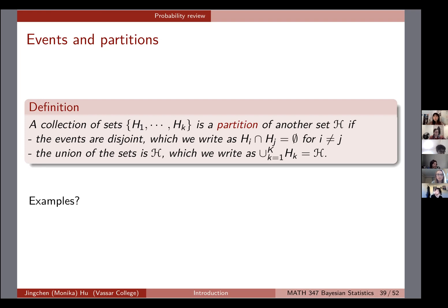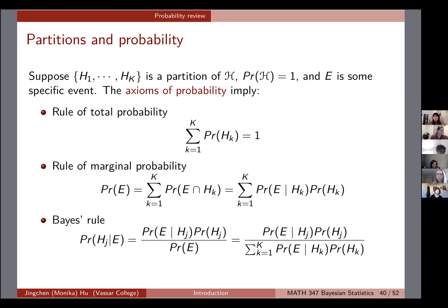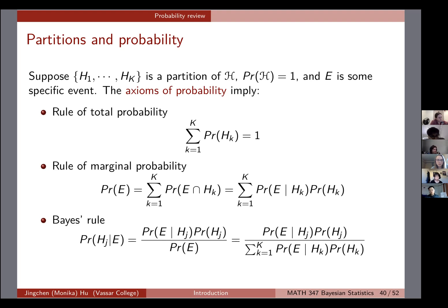I have one more slide to talk about partitions and probabilities to link it back to the review concept. Suppose we have a partition H1 through HK and we know that the probability of the entire curly H — the big population or space — is one, and E is some specific event. The first important rule is the rule of total probability: if you have a partition H1 through HK, the sum of each of their probabilities should be one, because they're disjoint and their union is the entire space.